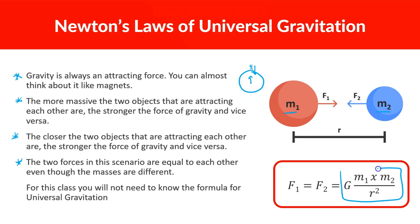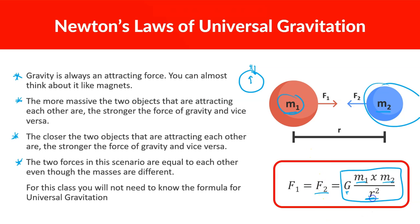This is the formula for universal gravitation. You don't have to memorize it, but it helps make sense of things. The force of gravitational attraction depends on G (the universal constant), the mass of one object, the mass of the other object, and the distance between them.